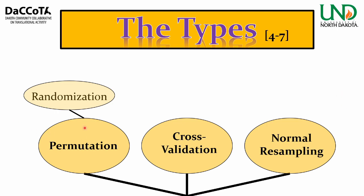Within permutation, there is essentially randomization — the simplest form of resampling. You're shuffling observations across groups. Imagine data with groups like A and B and some sort of measurement; you shuffle which group the measurement is in, and you can do this repeatedly to calculate statistics such as the mean.